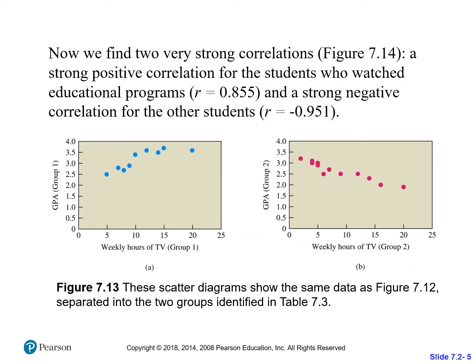When we break them down into those two groups, we discover that the folks who are watching educational TV have an R of 0.855, which is strong positive. And the folks who are watching regular TV have a negative 0.95. We see that the more educational programming you watch, the higher the GPA; the more regular TV watched, the lower the GPA.